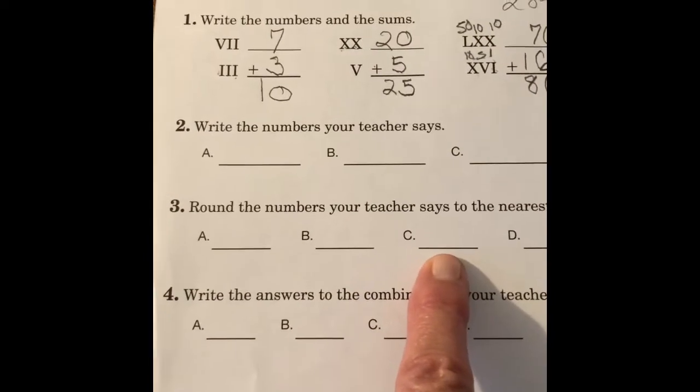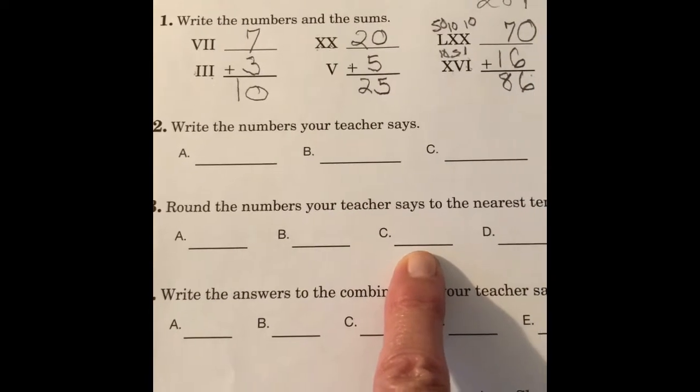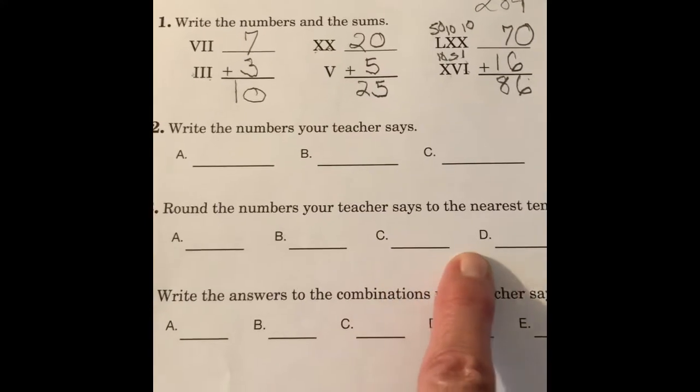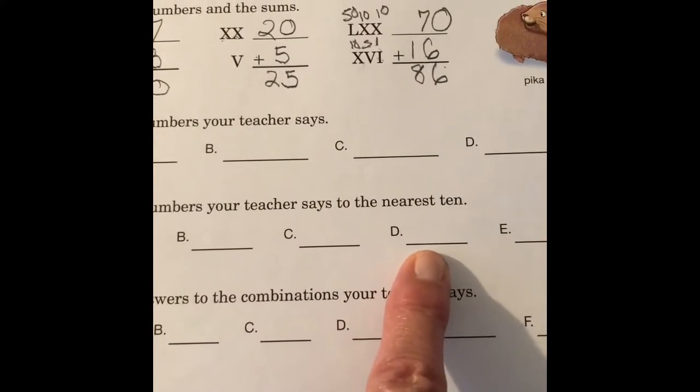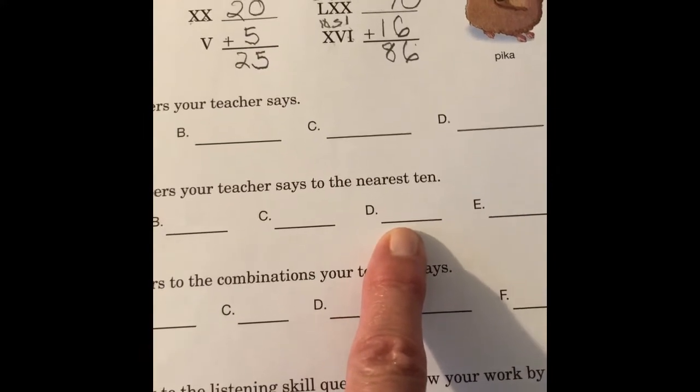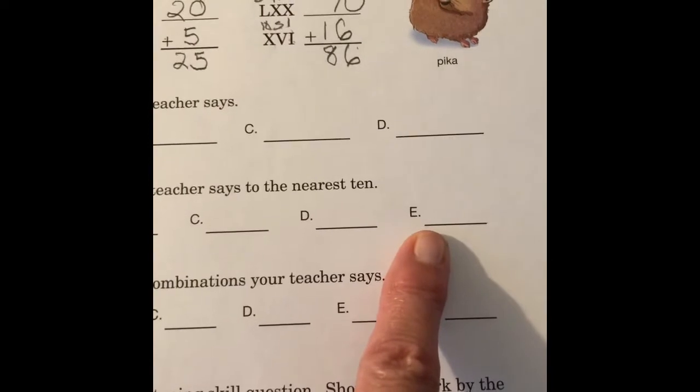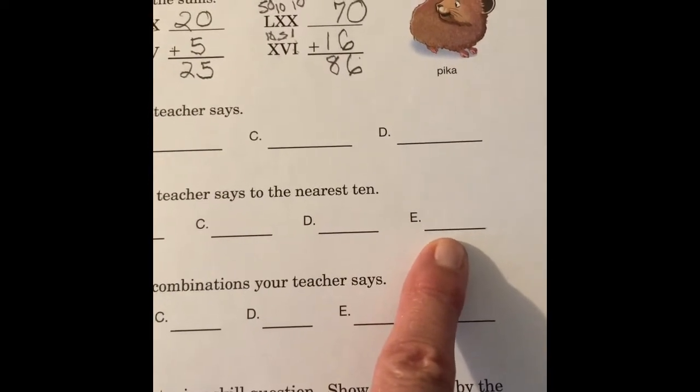B, the number is 17, 17. C, the number is 22, 22. D, the number is 55, 55. E, the number is 34, 34.